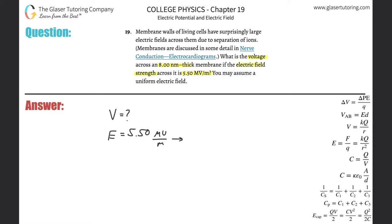So it's 5.50 times 10^6 volts per meter. Then the distance between the two - they told us the thickness of the membrane - pesky question writers gave it in nanometers. You know we need that in meters, so this is 8 times 10^-9 meters.